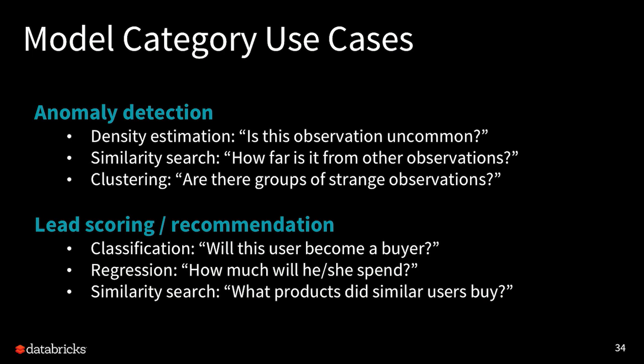Anomaly detection is about trying to find uncommon observations — it's used often in IoT applications as well as looking for fraud, looking for things outside the norm. Lead scoring and recommendation tend to be more in the supervised category — classifying a person as will they become a buyer, is this a good lead target or not. I'll provide a demo for that in a minute, as well as regression — for example, how much will this person spend. I'll also cover a demonstration of how to do a recommendation engine.